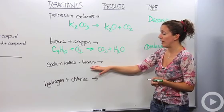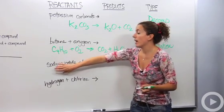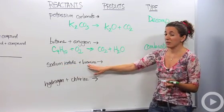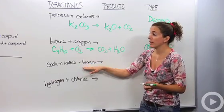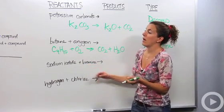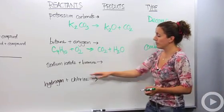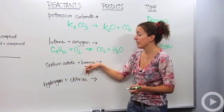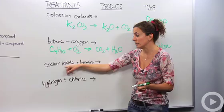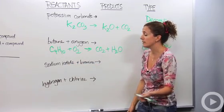Next one we have is sodium iodide and bromine. We have an ionic compound coming together with an element. That should ding in your head as, okay, that is a single replacement reaction. I'm just going to put SR. So what's going to happen is this non-metal is going to replace this non-metal. Don't forget that non-metals replace non-metals and metals replace metals.